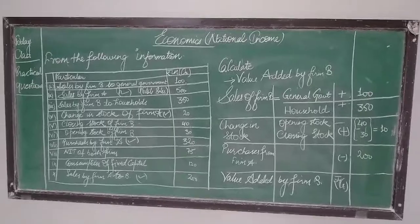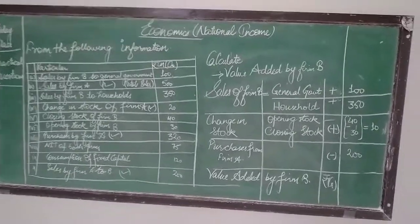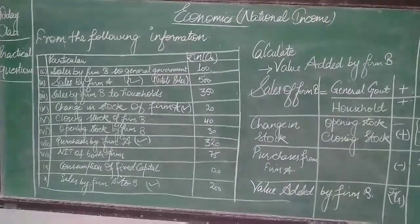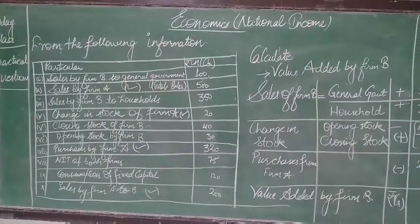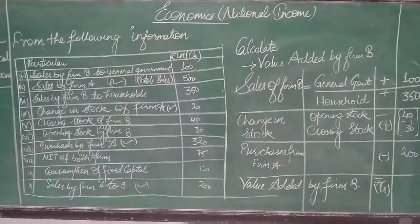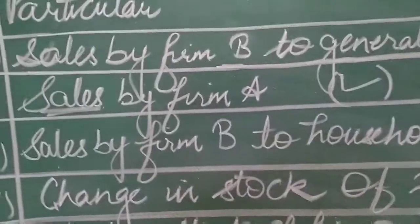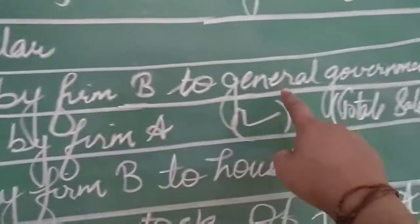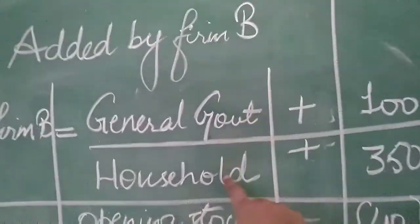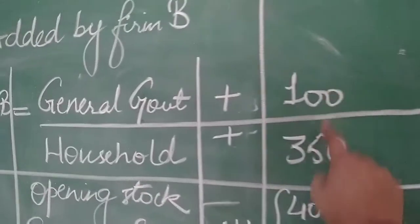Scholars, again I have assembled with you. I am delivering the solution to you for the same question which we were discussing earlier. Firstly, we have calculated firm A value. Now we are calculating firm B value. We will going to have the same prospect to be done with. This is firm B. We will going to have sales by firm B. This is to general government, 100 rupees, and then household. Both will be included because they are specified. Then we have 450.